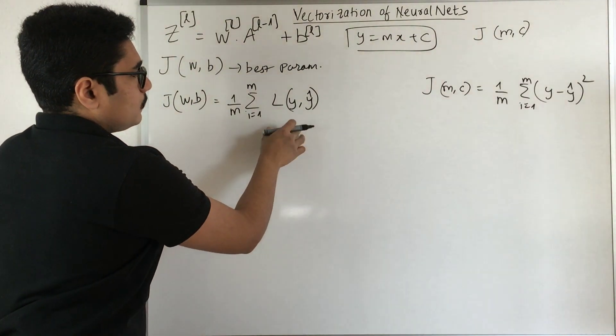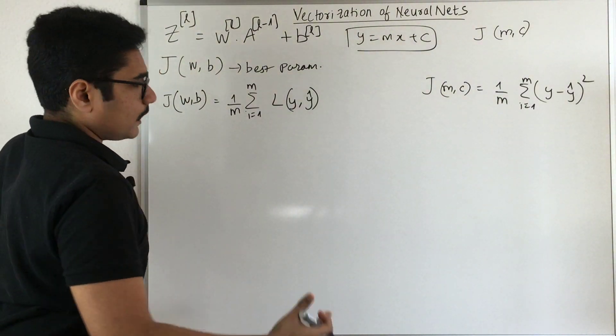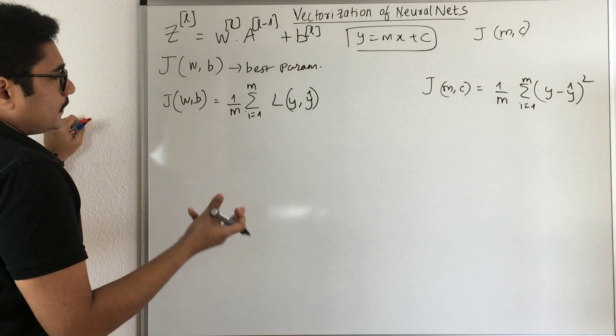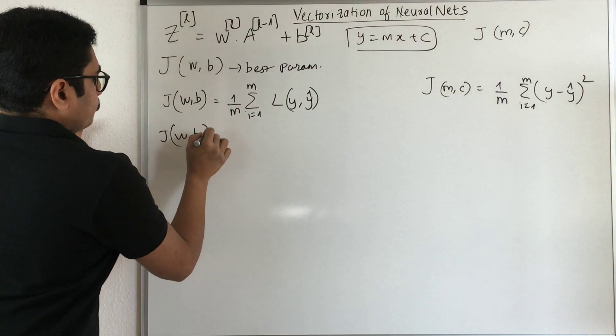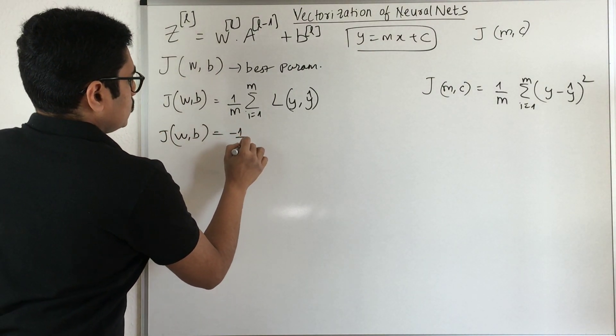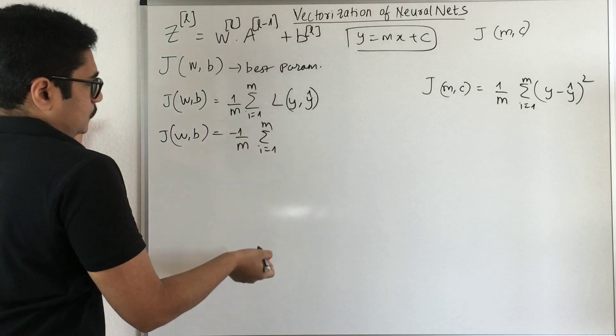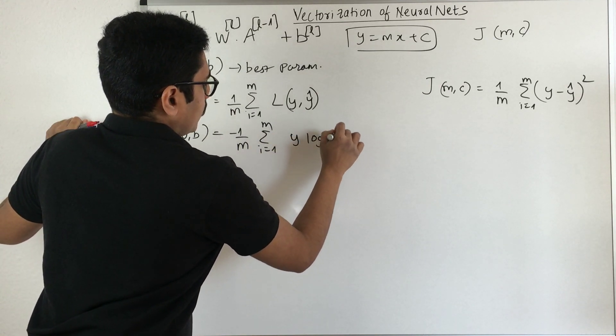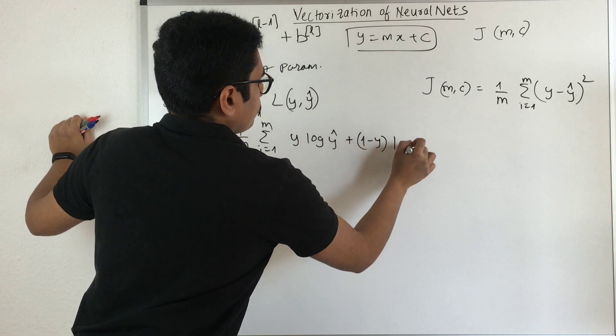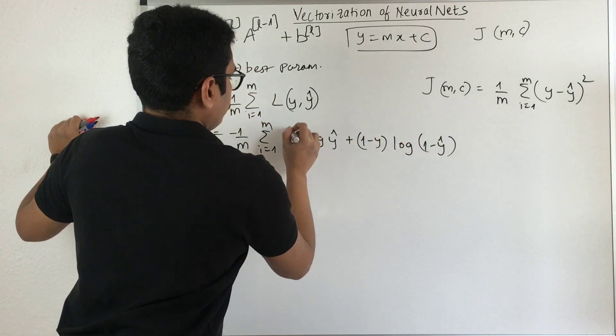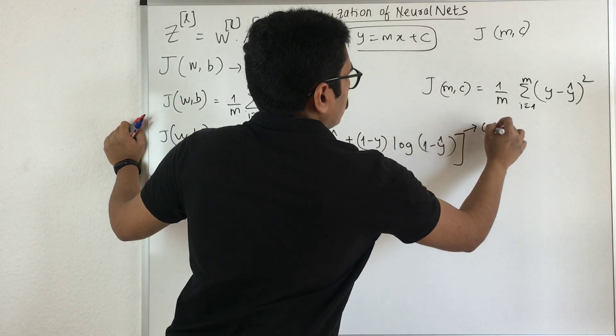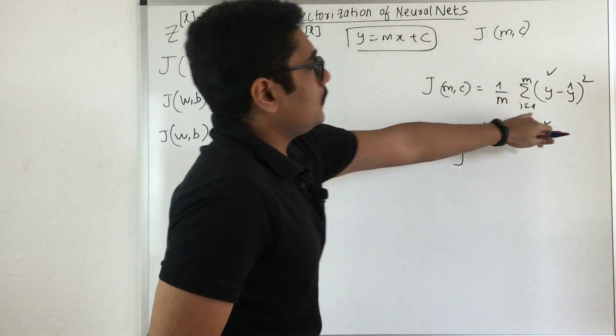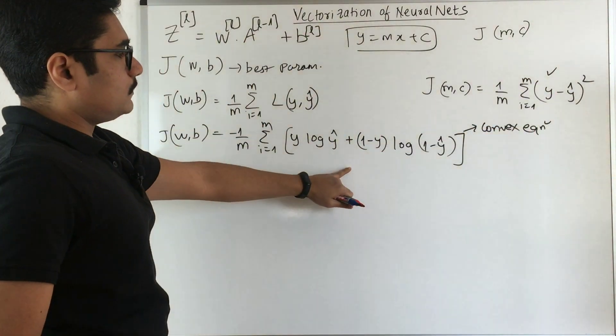But the problem here is if you want to take the derivative, you need to have this in a convex form. So you can represent this as a combination of log loss function, which is expanded as y log y cap plus (1 minus y) log (1 minus y cap). Now this is a convex equation which becomes differentiable.